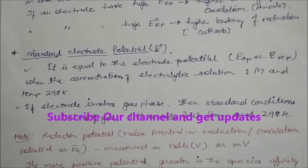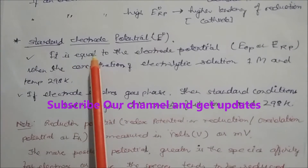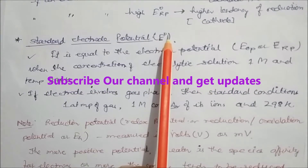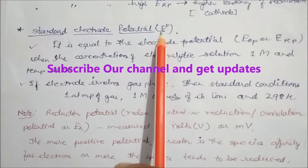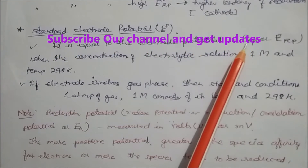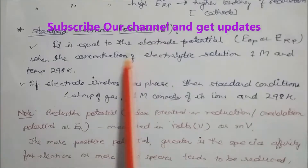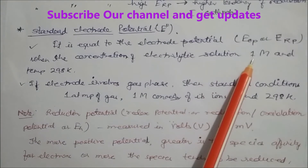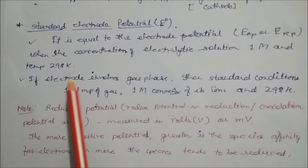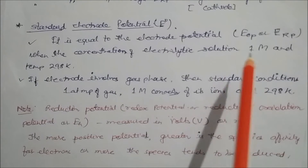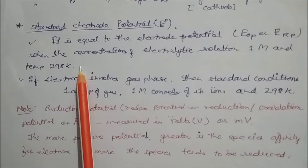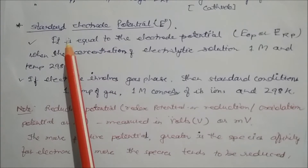Now, the next definition is standard electrode potential, written as E0. E0 means the electrode potential — EOP or ERP — measured when the concentration of the electrolytic solution is one molarity and the temperature is 298 Kelvin. This is the standard electrode potential, which is why we write the small superscript zero over E.